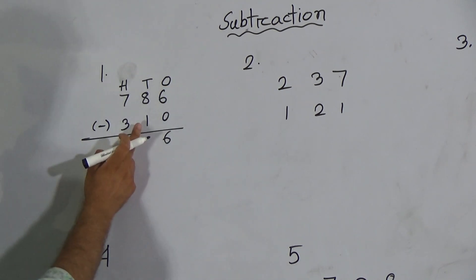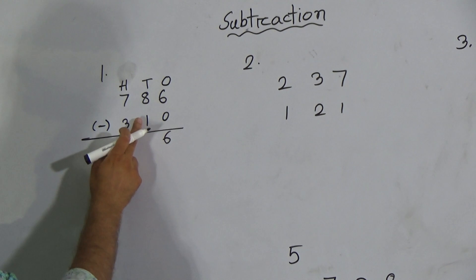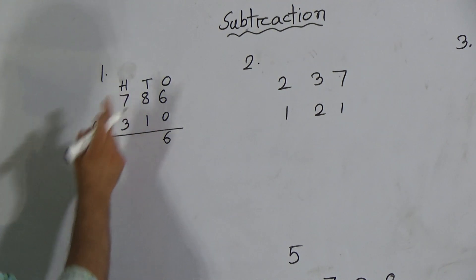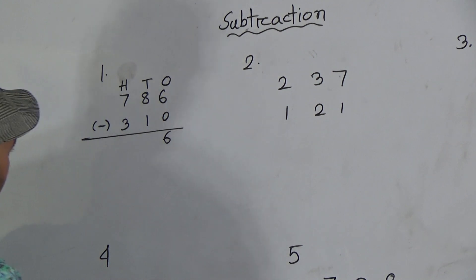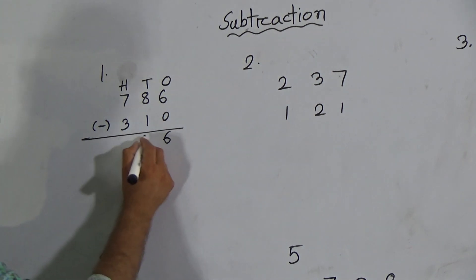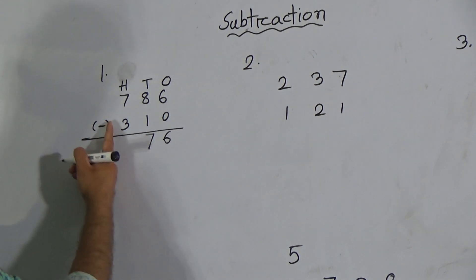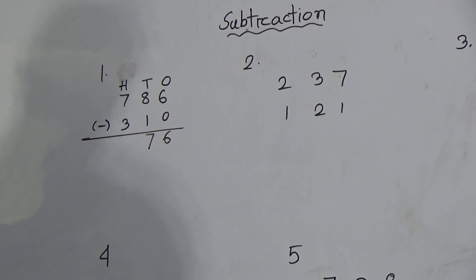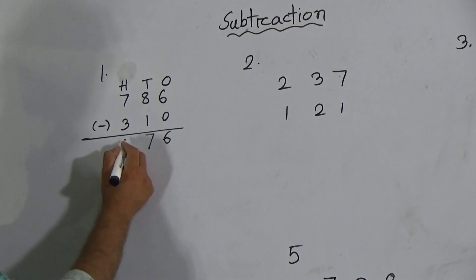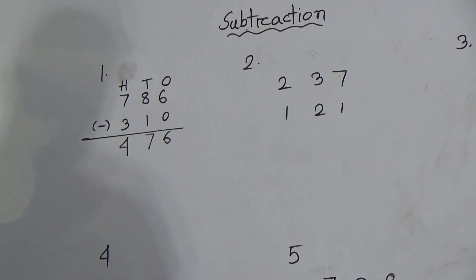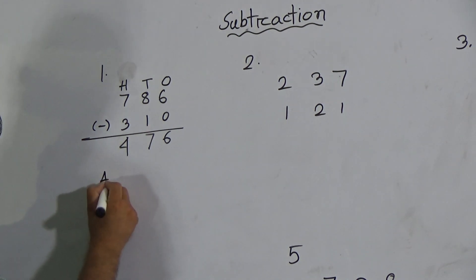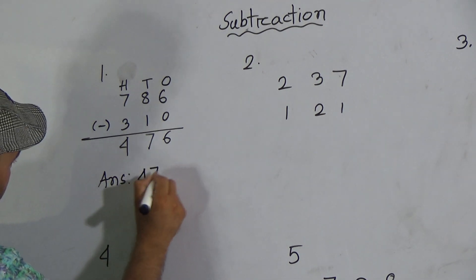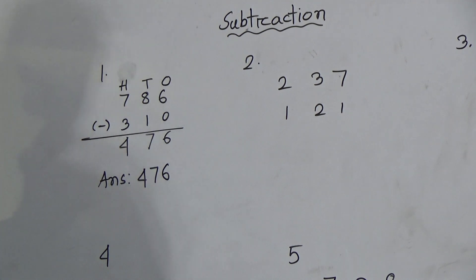Now here is the next column — tens place — one and eight. We have to subtract one from eight, it will be seven. And the last column is hundreds place, here is three from seven, it will be four. So the correct answer is four hundred seventy-six. My students, hope you understood this one.